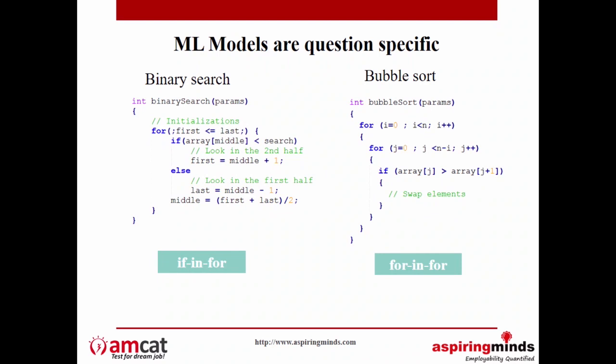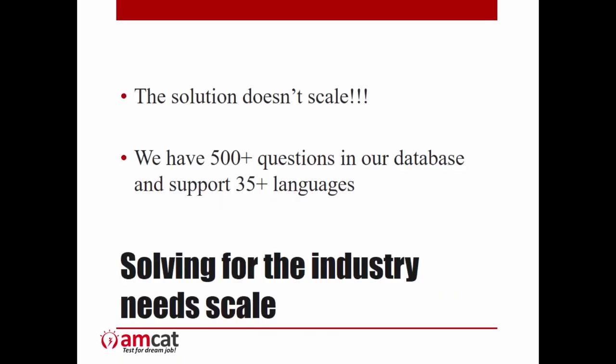The machine learning models are question-specific or task-specific. For binary search, the model automatically learns you need an if and a for. For bubble sort, it looks for a for within a for. But this solution doesn't scale. Aspiring Minds has 500-plus questions in the database and supports 35-plus programming languages. That means you need 500 times 35 different models and 500 times 35 times 400 data points to get all these models. Solving for industry needs scale — you have to think about how the real-world problem will actually get solved.